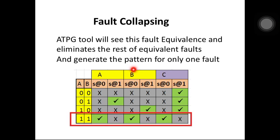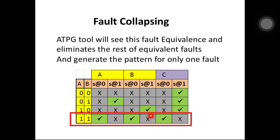Now what is meant by fault collapsing? By using the 1-1 input pattern at nodes A and B we are able to cover 3 faults. So there is no need to burden the tool to generate again the stuck-at-0 pattern at node B and stuck-at-0 pattern at node C. These two redundant faults can be eliminated. This elimination of redundant faults is known as fault collapsing.